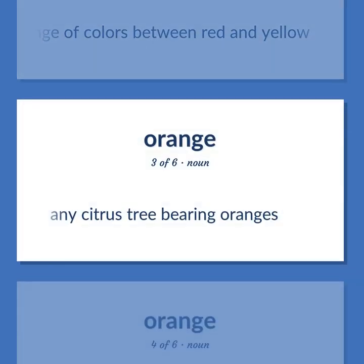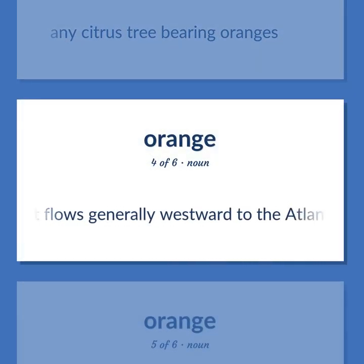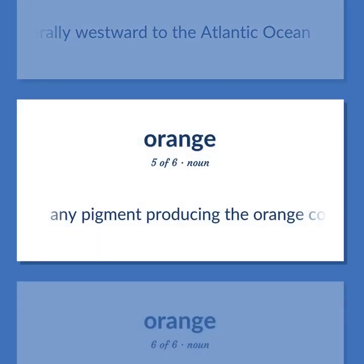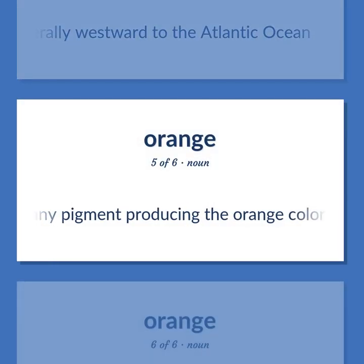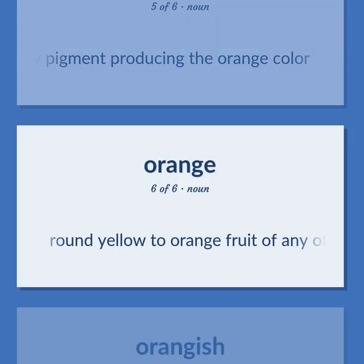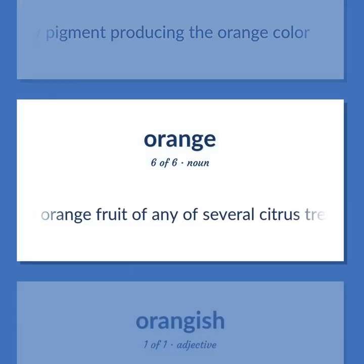Any citrus tree bearing oranges. A river in South Africa that flows generally westward to the Atlantic Ocean. Any pigment producing the orange color. Round yellow to orange fruit of any of several citrus trees.